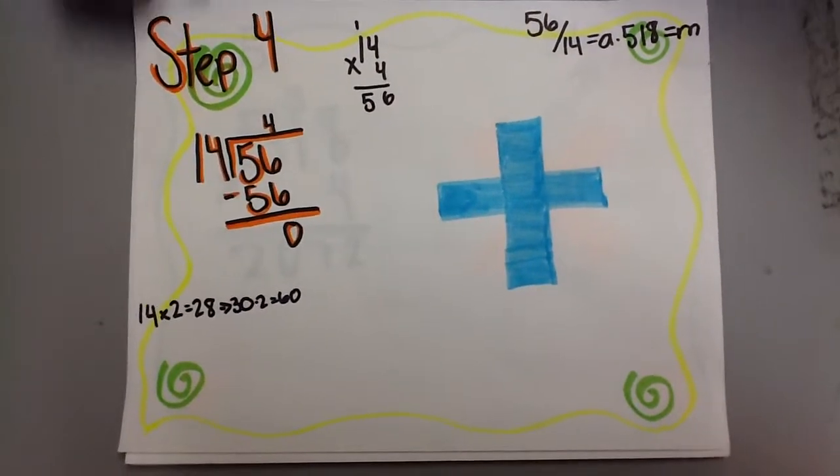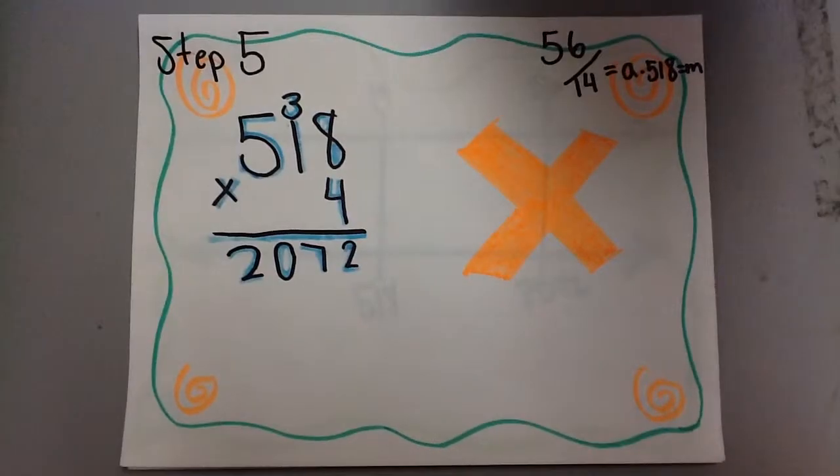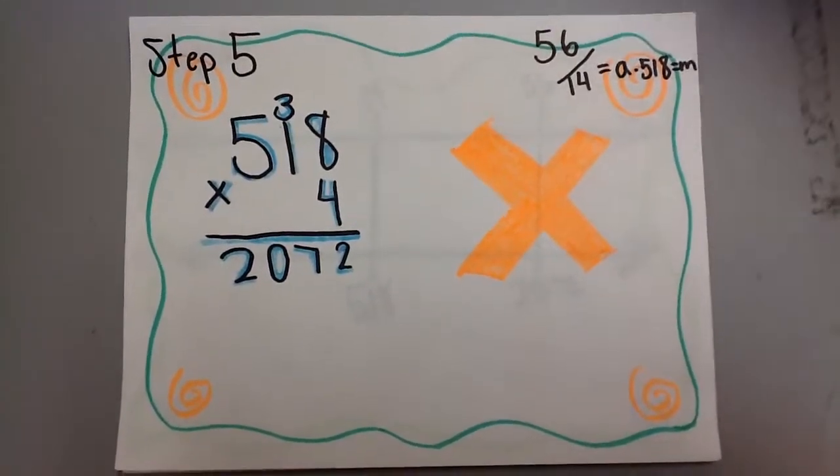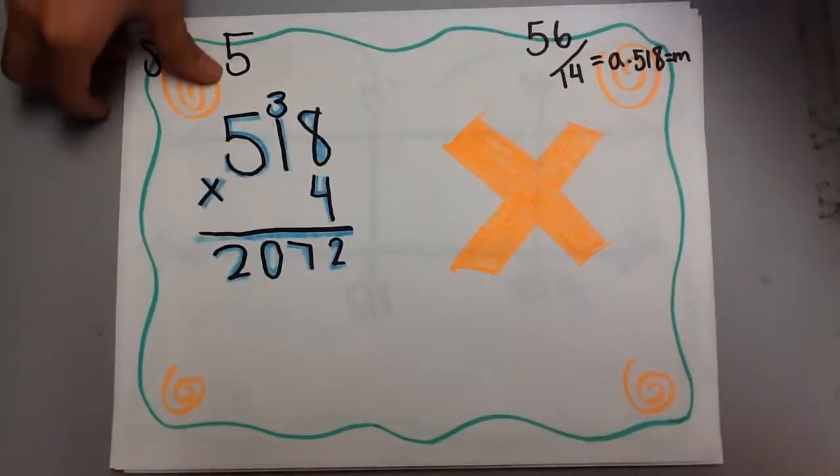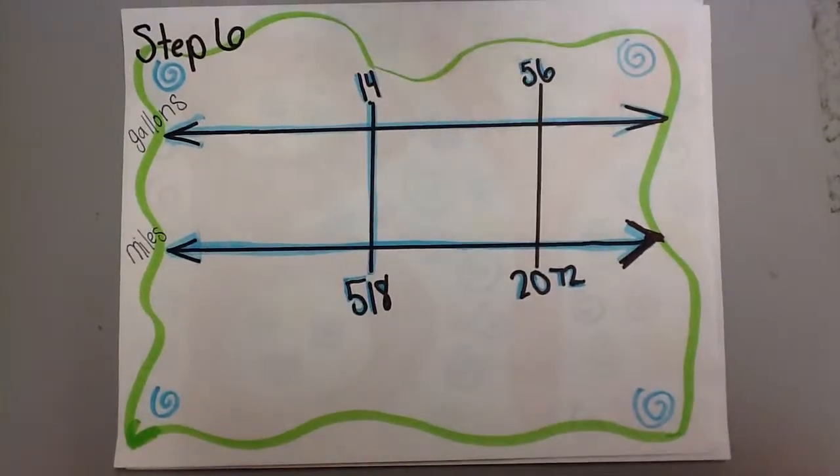And now we have to multiply 518 by 4, which equals 2,072. And that is how many miles Bob can drive with 56 gallons of gas.